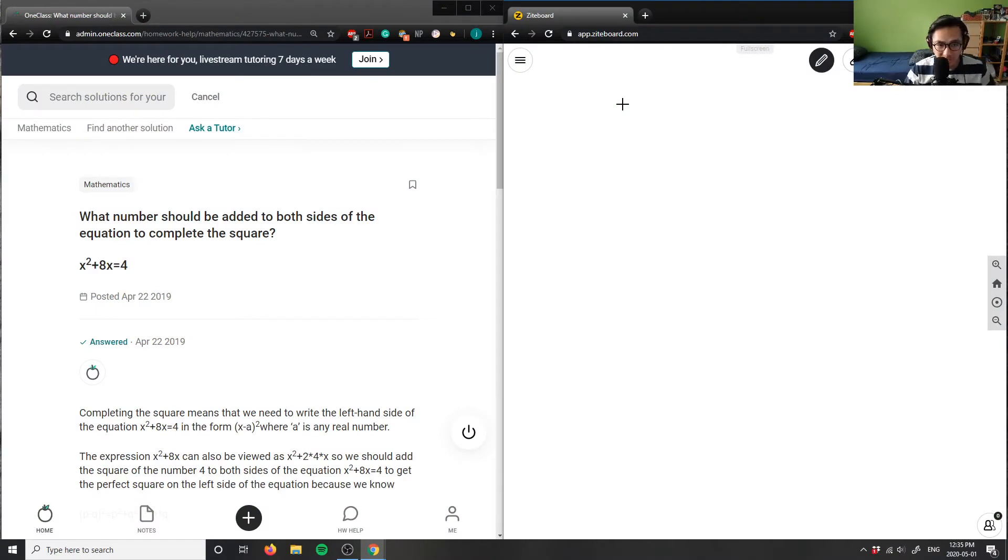So it says what number should be added to both sides of the equation to complete the square. I have x² + 8x = 4.